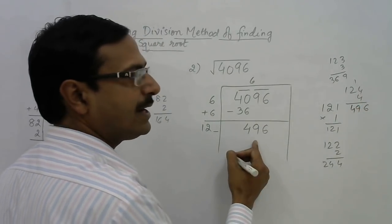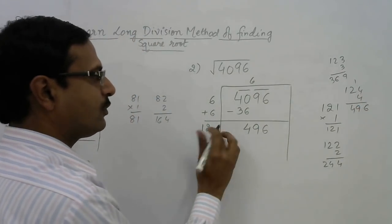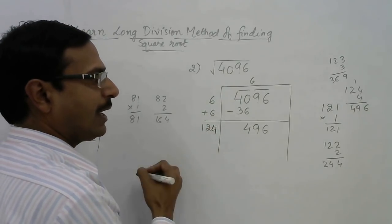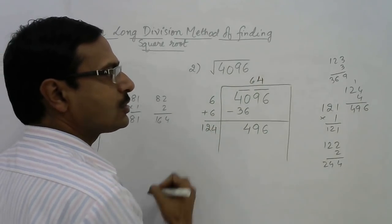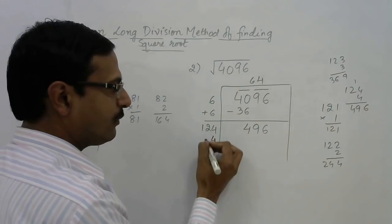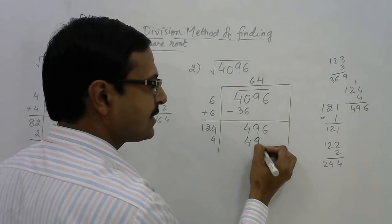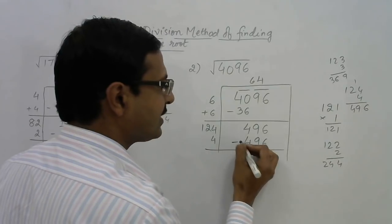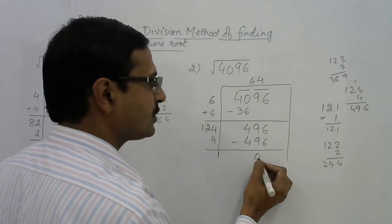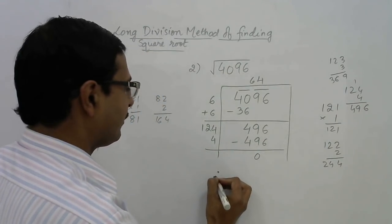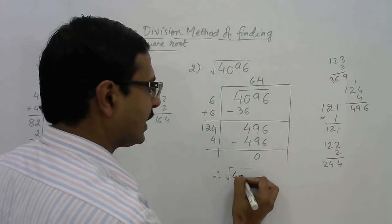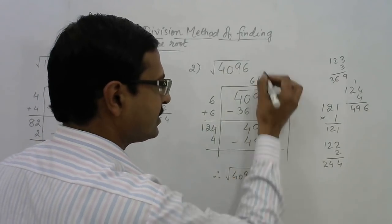Choose greater: 124 into 4 gives 496. We have to choose 4 here and 4 will come in the answer also. 124 into 4 gives exactly 496, and if you subtract this, the process terminates because we get 0. Therefore, square root of 4096 is 64.